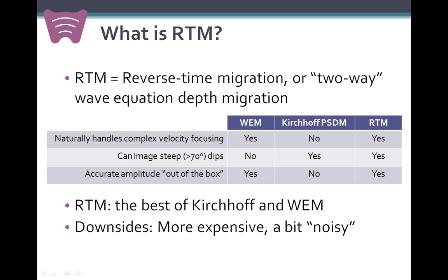So let's put RTM in context with the other common depth migration algorithms today. Those would be Kirchhoff PSDM and WEM. WEM algorithms naturally handle complex velocity focusing and produce pretty good amplitudes out of the box, but they have a problem in that they cannot image steep dips beyond 65 to 70 degrees. Kirchhoff algorithms, on the other hand, can image steep dips, but they tend to have trouble with complex velocity structures, and it takes some engineering to produce accurate amplitudes. So by contrast to Kirchhoff and WEM, RTM basically solves all those problems.